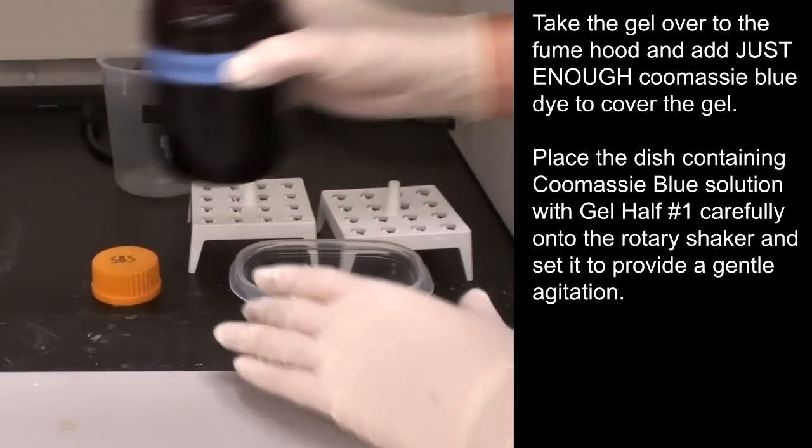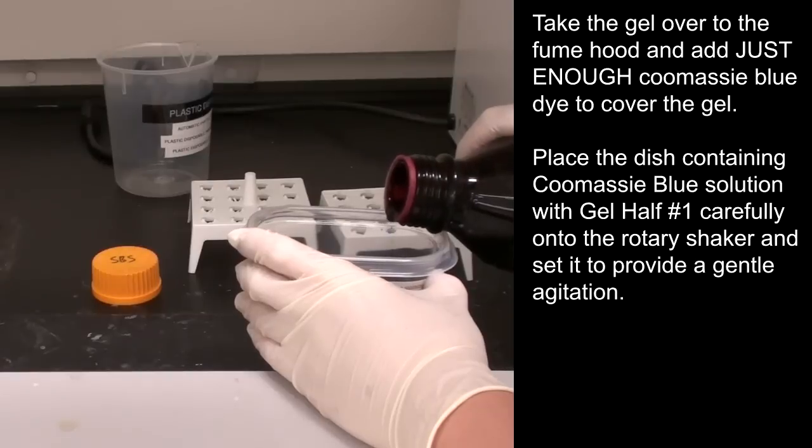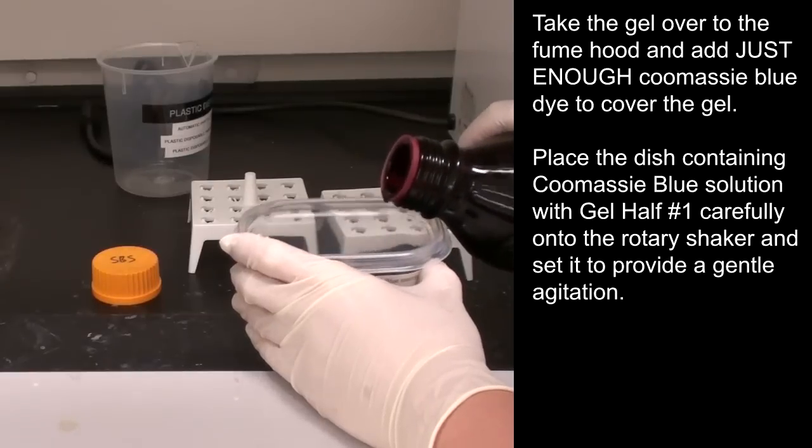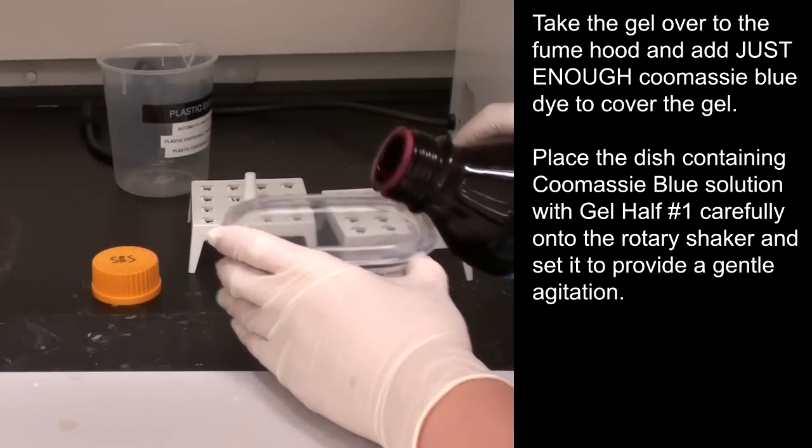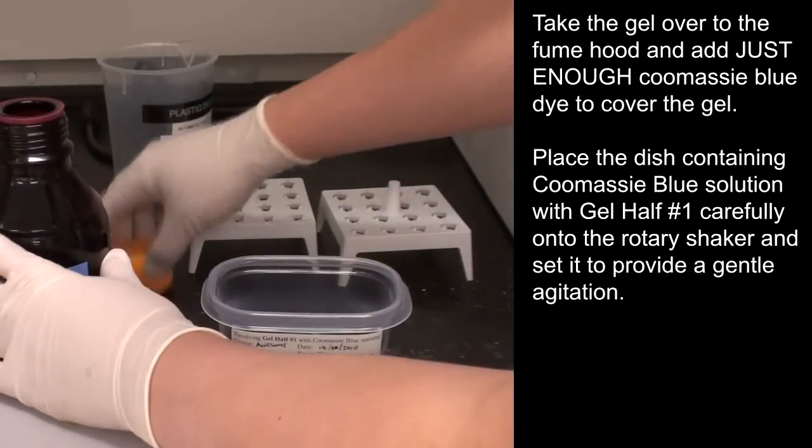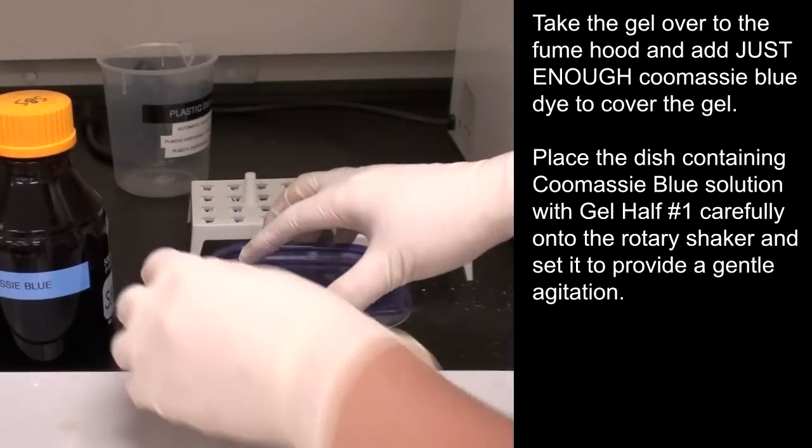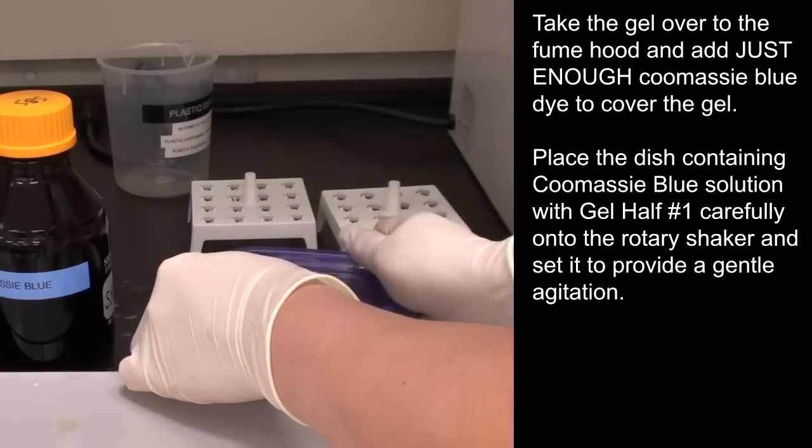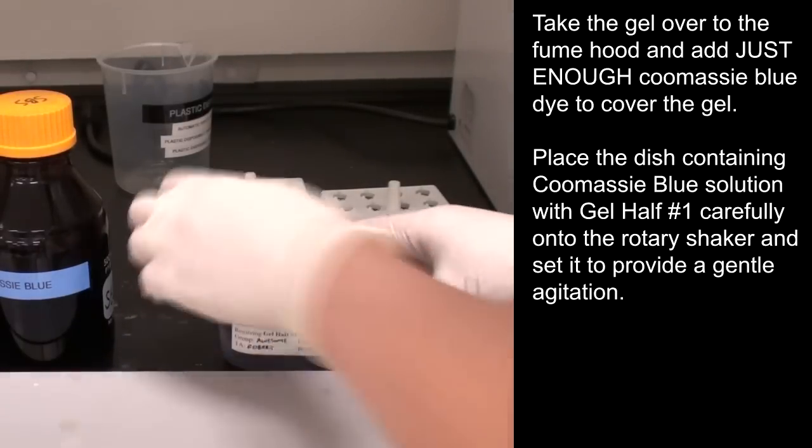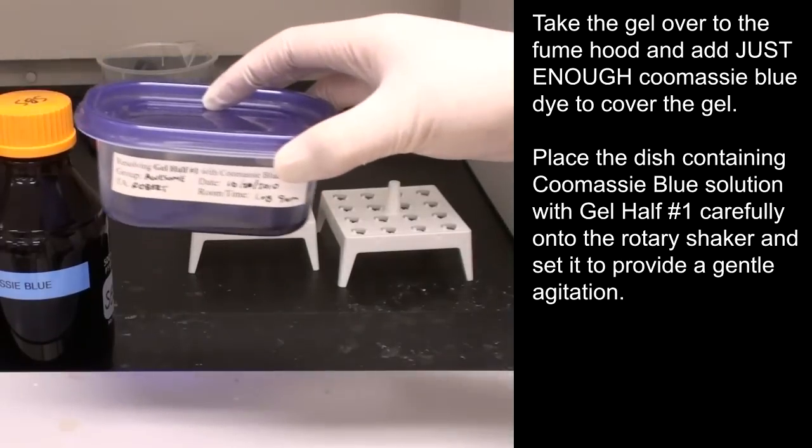Take the gel over to the fume hood and add just enough Coomassie blue dye to cover the gel. Place the dish containing Coomassie blue solution with gel half number 1 carefully onto the rotary shaker and set it to provide a gentle agitation.